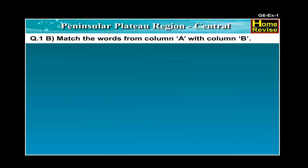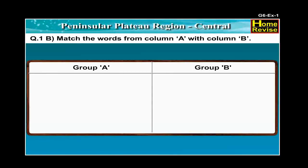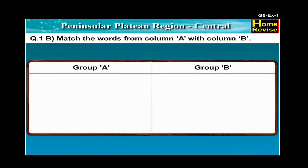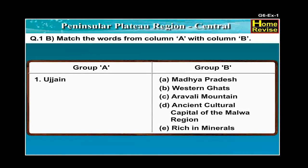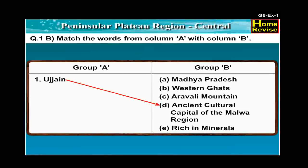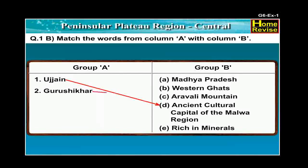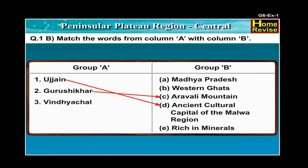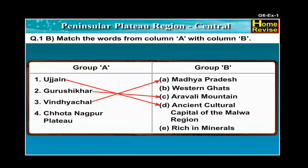Question 1: Match the words from column A with column B. The matching pairs are: Number 1, Ujjain — ancient cultural capital of Malwa region. Number 2, Gurushikar — Aravali Mountain. Number 3, Vindyachal — Madhya Pradesh. And Number 4, Chota Nagpur Plateau — rich in minerals.